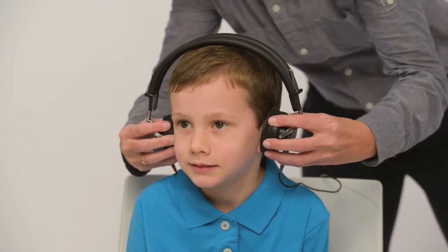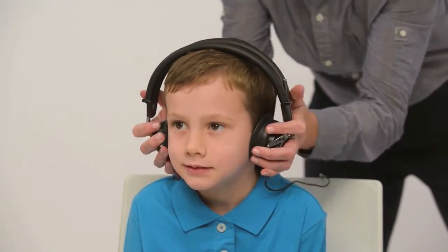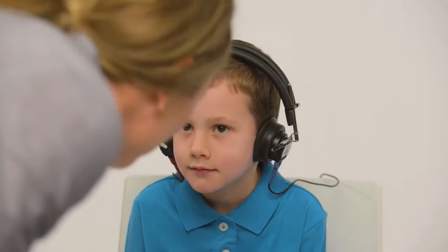Place headphones directly over the child's ears with red phone on the right ear, blue on the left. Remove any obstructions that may interfere or be uncomfortable, such as glasses. Adjust the headband so the headphones are centered over the ear canal.